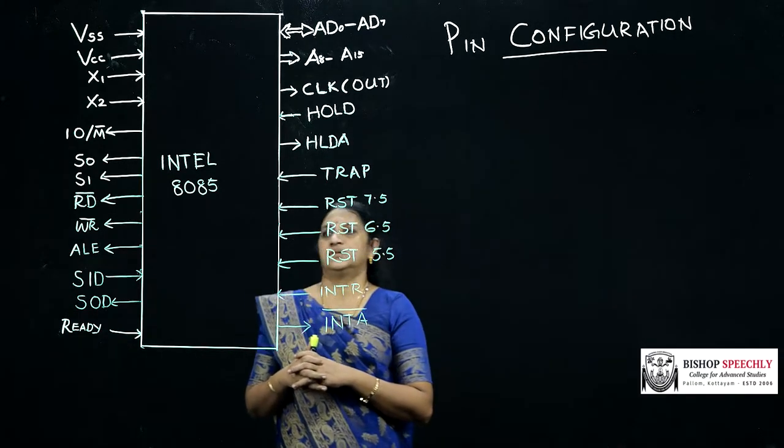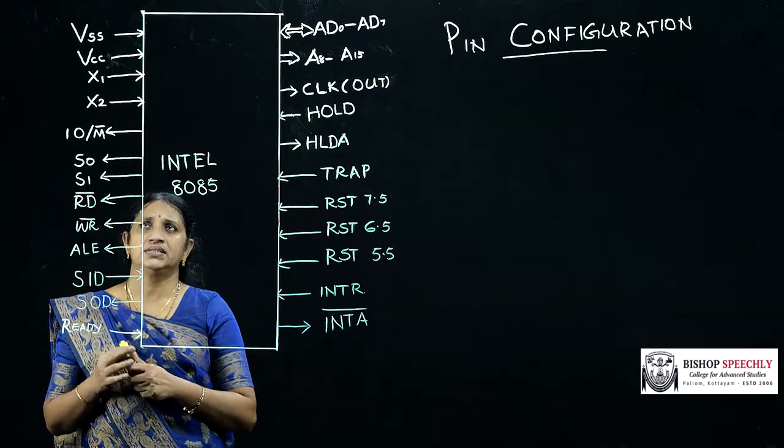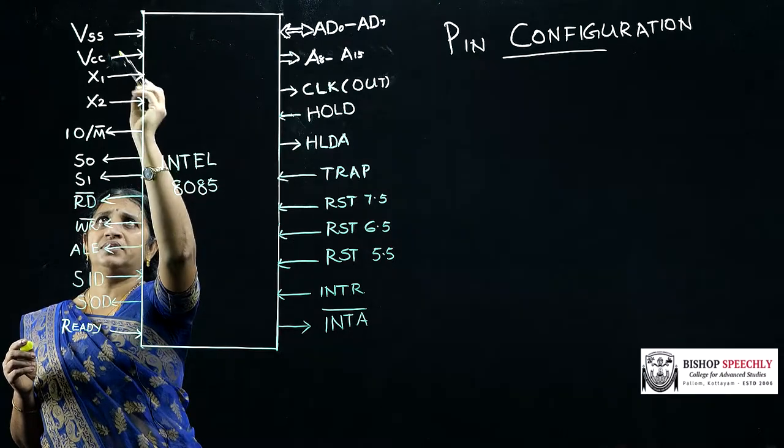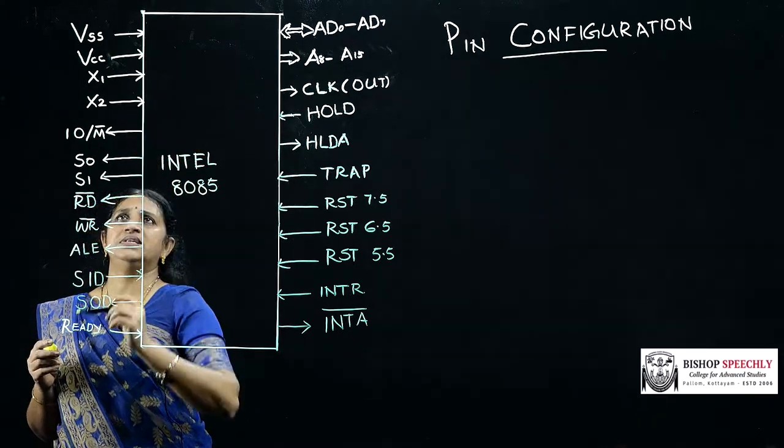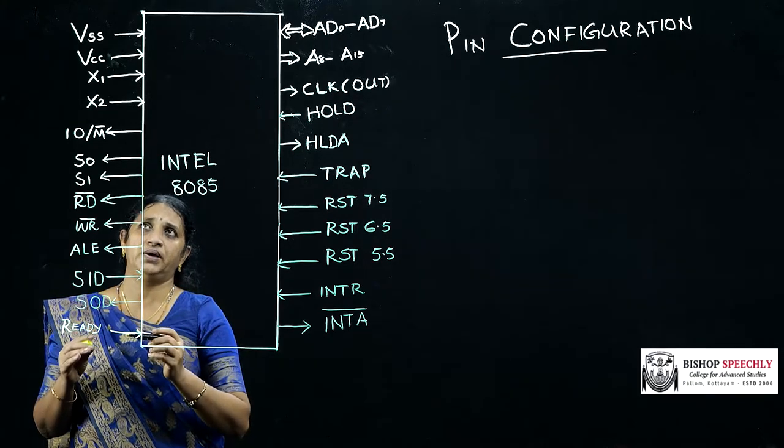These are the different types of pins. The first one is VSS. VSS means it is used for ground reference. The next pin VCC is used for providing plus 5 volt supply.